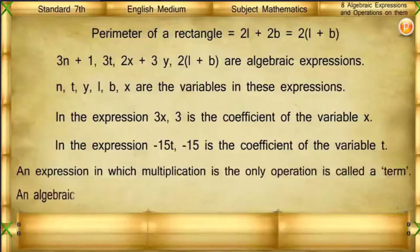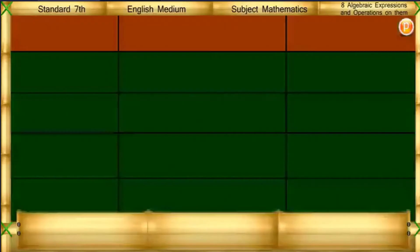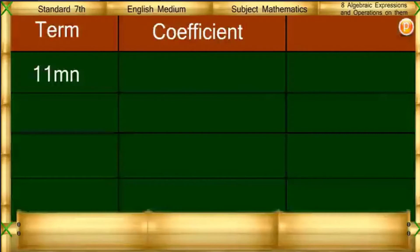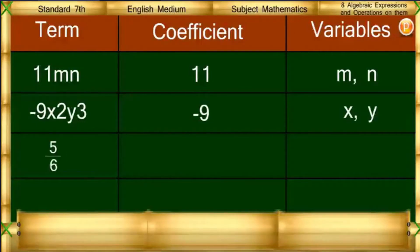An algebraic expression may have one term or may be the sum of several terms. For example, the term 11MN has coefficient 11 and variables M and N. The term minus 9X squared Y cubed has coefficient minus 9 and variables X and Y. The term 5/6 P has coefficient 5/6.